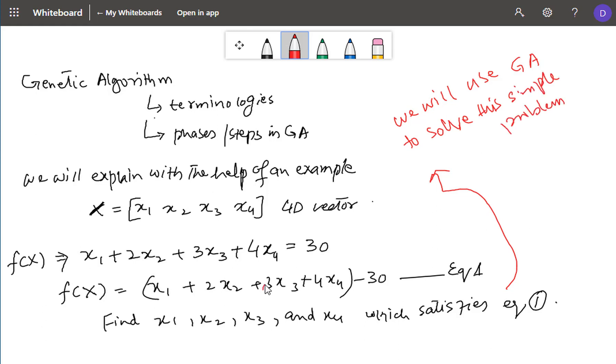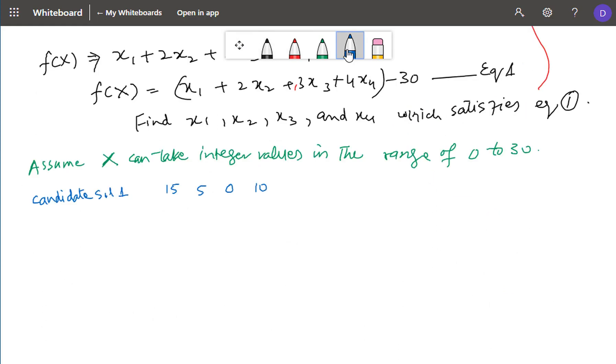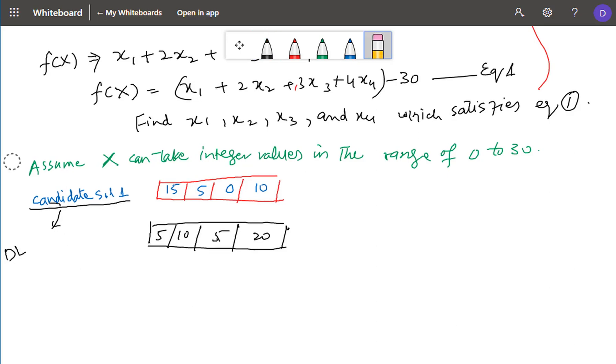Now there are many candidate solutions possible, for example 15, 5, 0 and 10 can achieve the goal, or 5, 10, 5, 20 maybe. So in Darwin's language these are individuals or chromosomes, potential solutions.